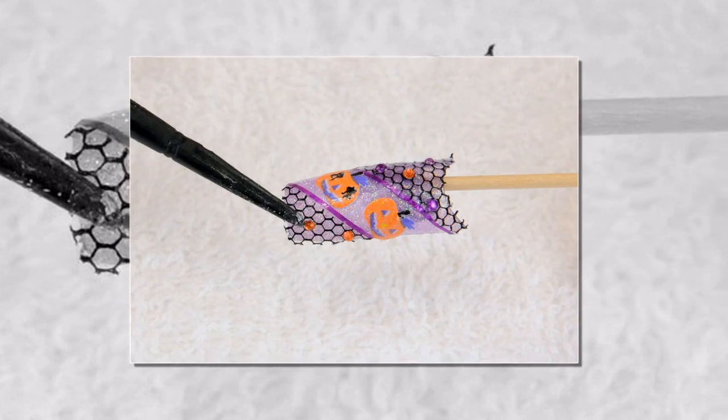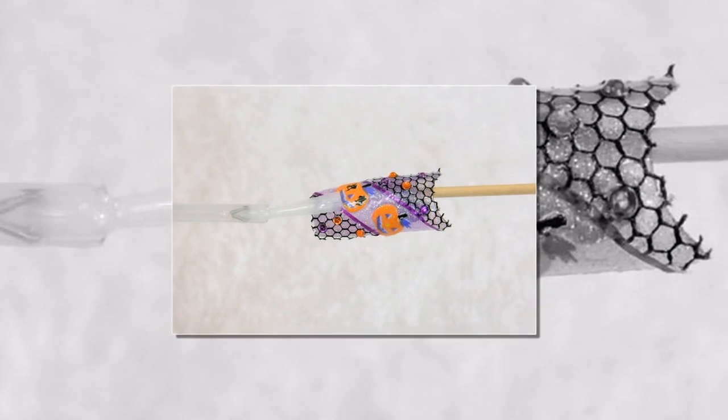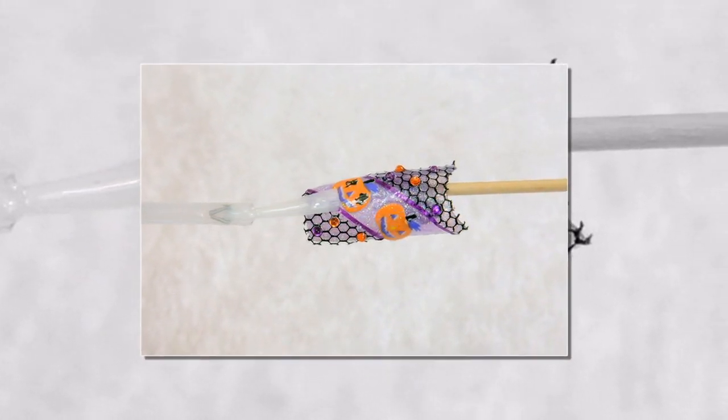Step 12: All right, now let's apply a healthy layer of top coat to finish off our design and keep those rhinestones fixed in place. You're done! You've created an attractive Halloween themed nail art design without even breaking a sweat.